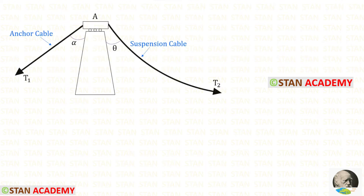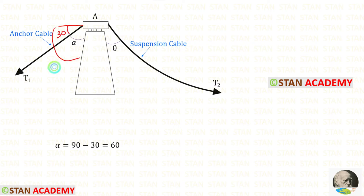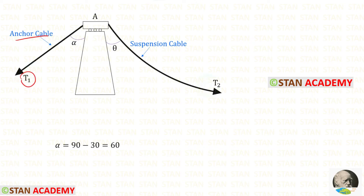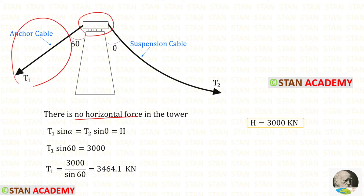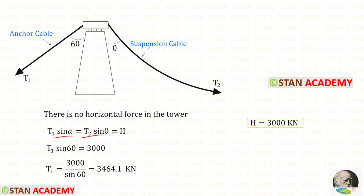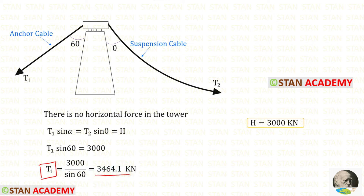In the previous video we saw how to find forces with a saddle or roller support. The wire inclination angle is 30 degrees; since the total angle is 90 degrees, alpha = 90 − 30 = 60 degrees. T1 is the tension in the anchor cable and T2 is the tension in the suspension cable. In a saddle or roller support there is no horizontal force, so the horizontal force on the left side equals the horizontal force on the right side, both equal to the horizontal thrust H. With alpha = 60° and H = 3000 kilonewtons, we find T1 = 3464.1 kN.